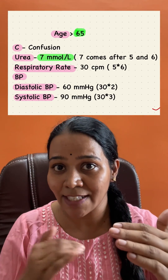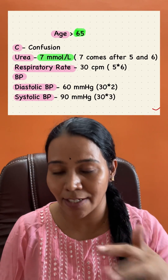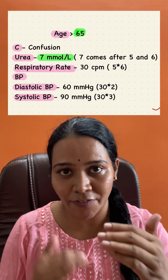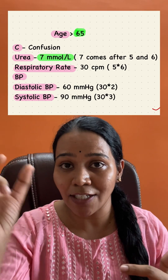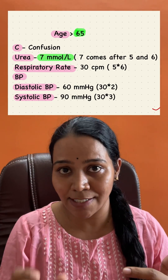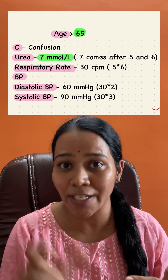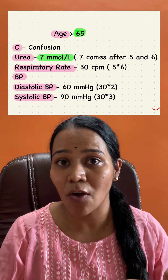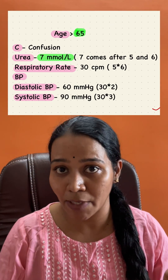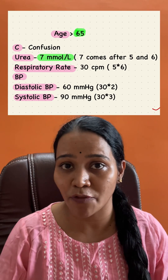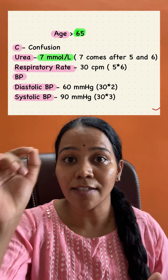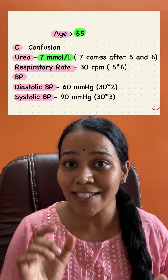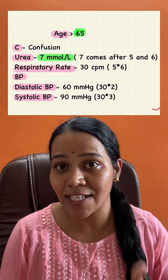For Blood Pressure, write diastolic first, then systolic — remember D comes before S alphabetically. Diastolic: 30 times 2 is 60, so diastolic less than or equal to 60 mmHg. Systolic: 30 times 3 is 90, so systolic less than or equal to 90 mmHg.